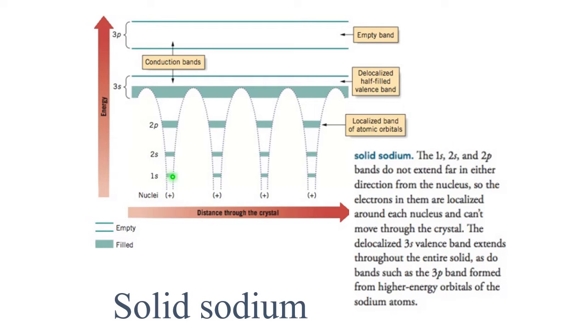We can see this drawing is not to scale. Deep down you have 1s, 2s, and 2p levels completely occupied in inner shells. Now, the only orbitals in the outer shell of sodium are 3s and 3p. 3p orbitals are empty. 3s orbitals have one electron per atom of sodium.